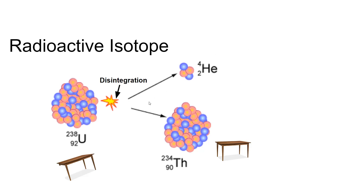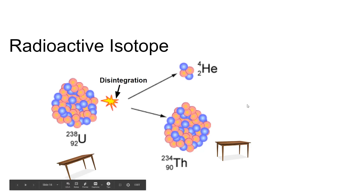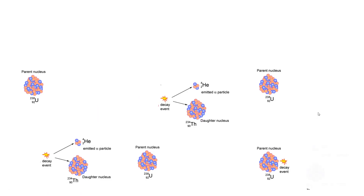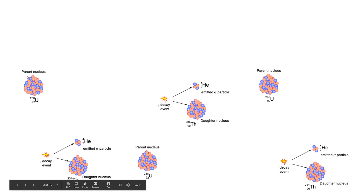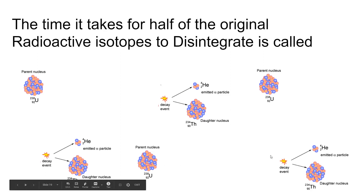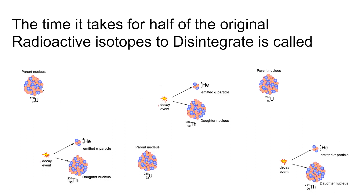There's a lot of energy in radioactive isotopes. Here we have six radioactive isotopes — I'm going to pick three of them to go through the disintegration process. We now have three radioactive isotopes and three stable atoms. The time it took for all three of them to decay is what's called a half-life — this is where half of the material disintegrates into a stable atom called a disintegration product.